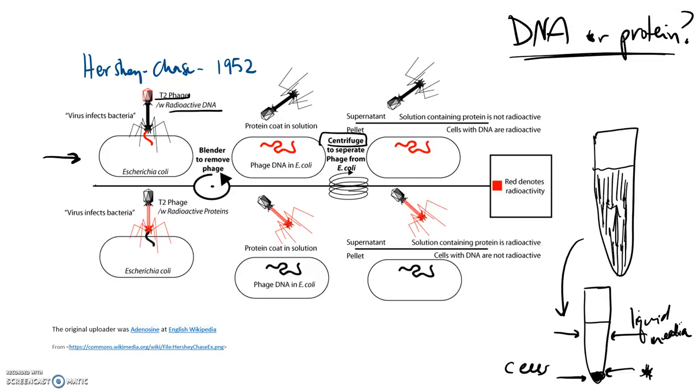In the next part of the experiment, they went through the same process, but this time, the radioactive label was actually put in the proteins of the phage and not in the DNA. Went through the same process, let it infect the cell, spun it down, and what they saw was, the second time around, that the radioactive label was actually found in the supernatant, meaning that protein molecule did not get into the E. coli cells. So that proved that it was the DNA that was the genetic material that was inherited.